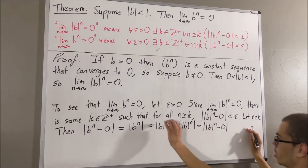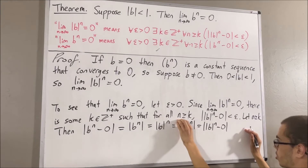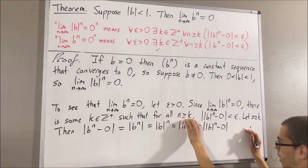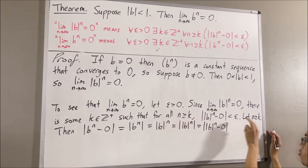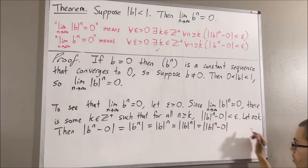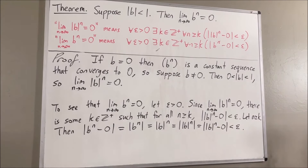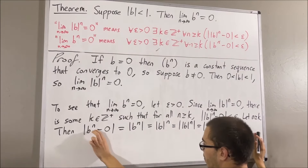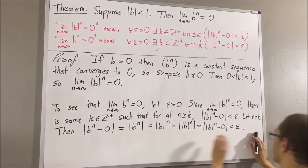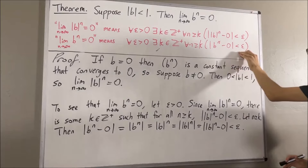But wait — we know that this statement is true for all positive integers greater than or equal to k, so in particular it must be true for n. Therefore, this inequality is true, and so this is less than epsilon. We have shown that the absolute value of b to the n minus 0 is less than epsilon, which is exactly what we wanted to show.